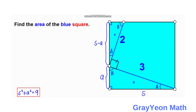Next we focus on the small right triangle on the upper left part. We use the ratio for the adjacent side of angle A, which is S minus A, all over the hypotenuse, which is two. We compare this to the larger right triangle where the adjacent side of A is S and the hypotenuse is three.